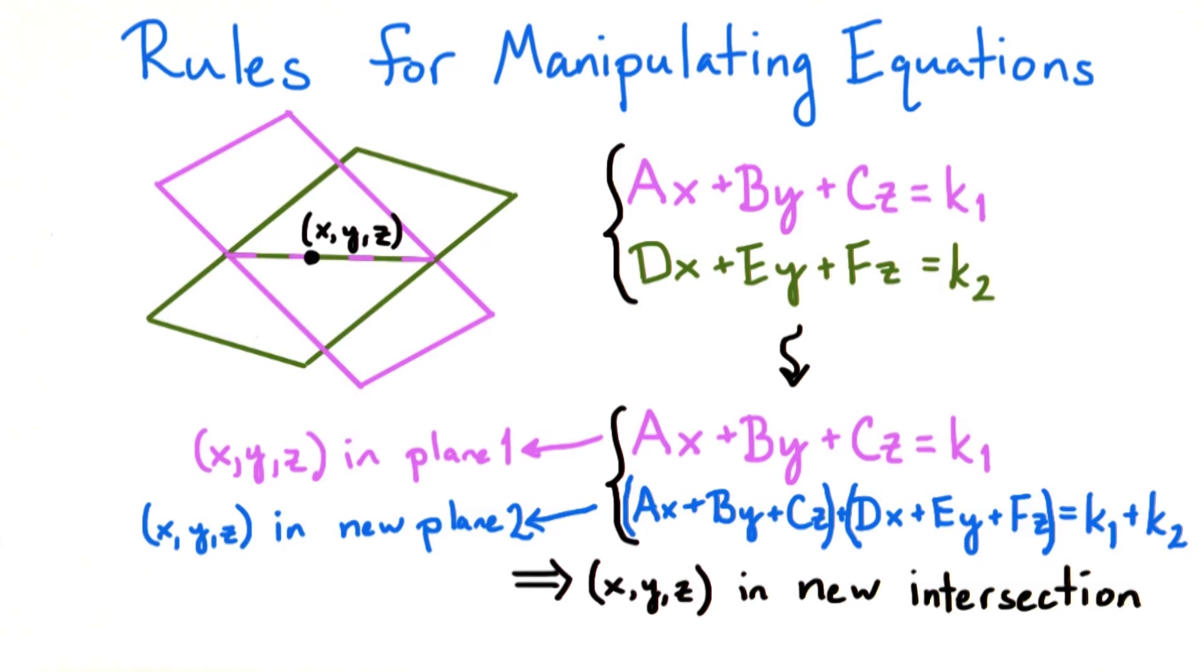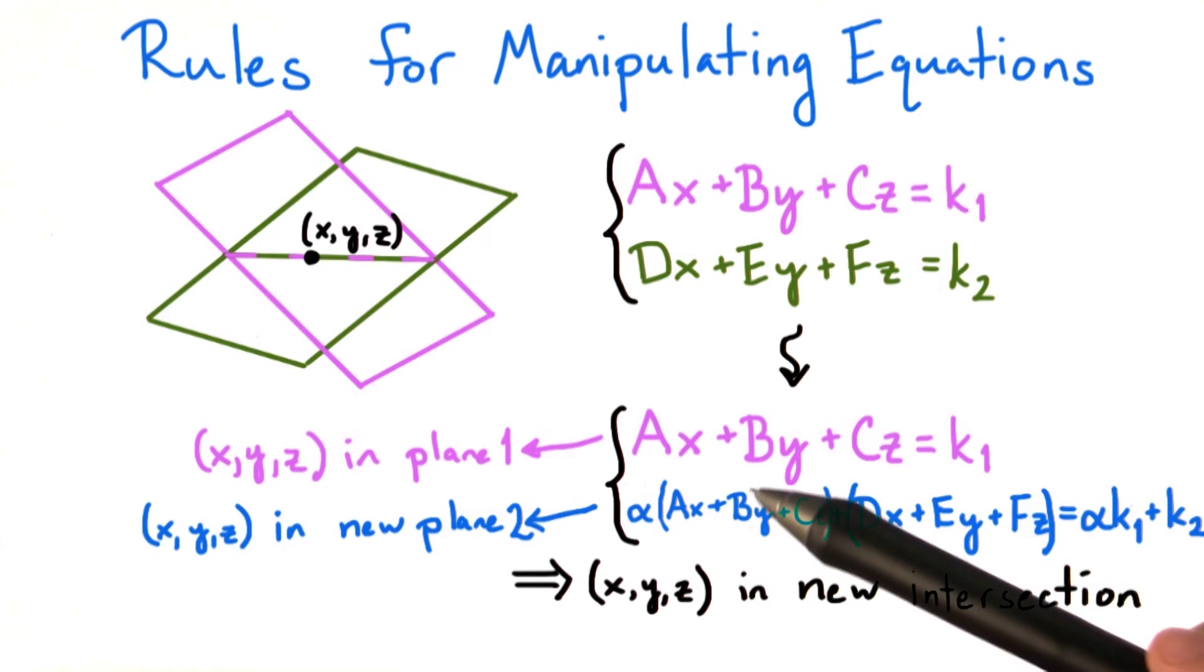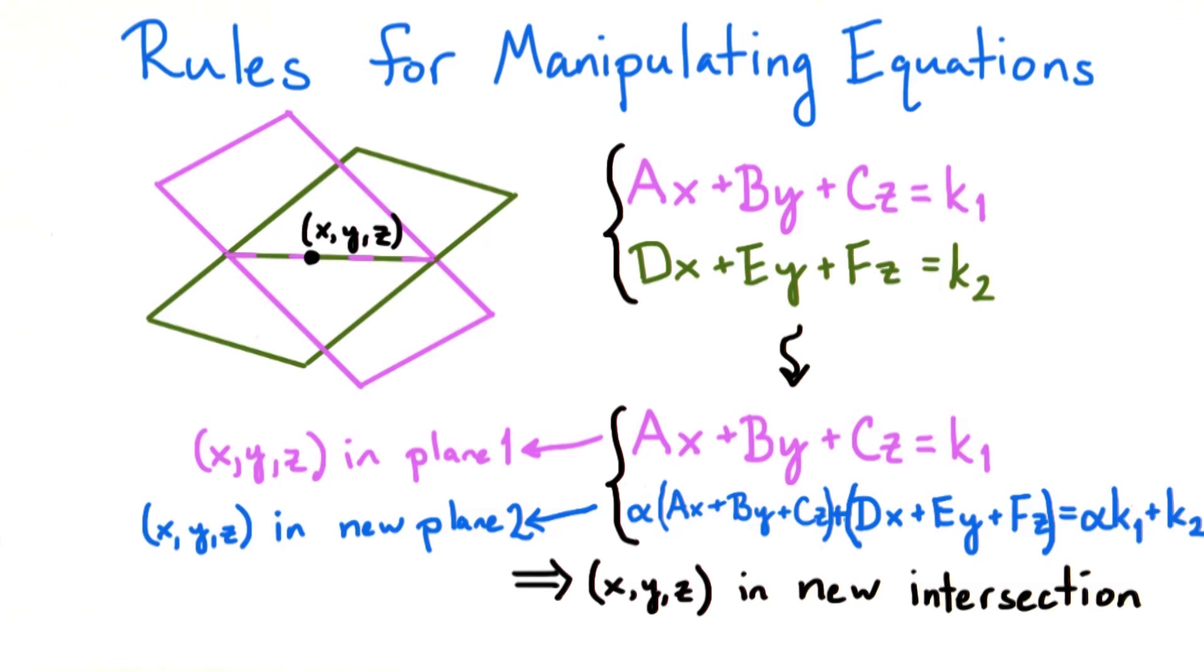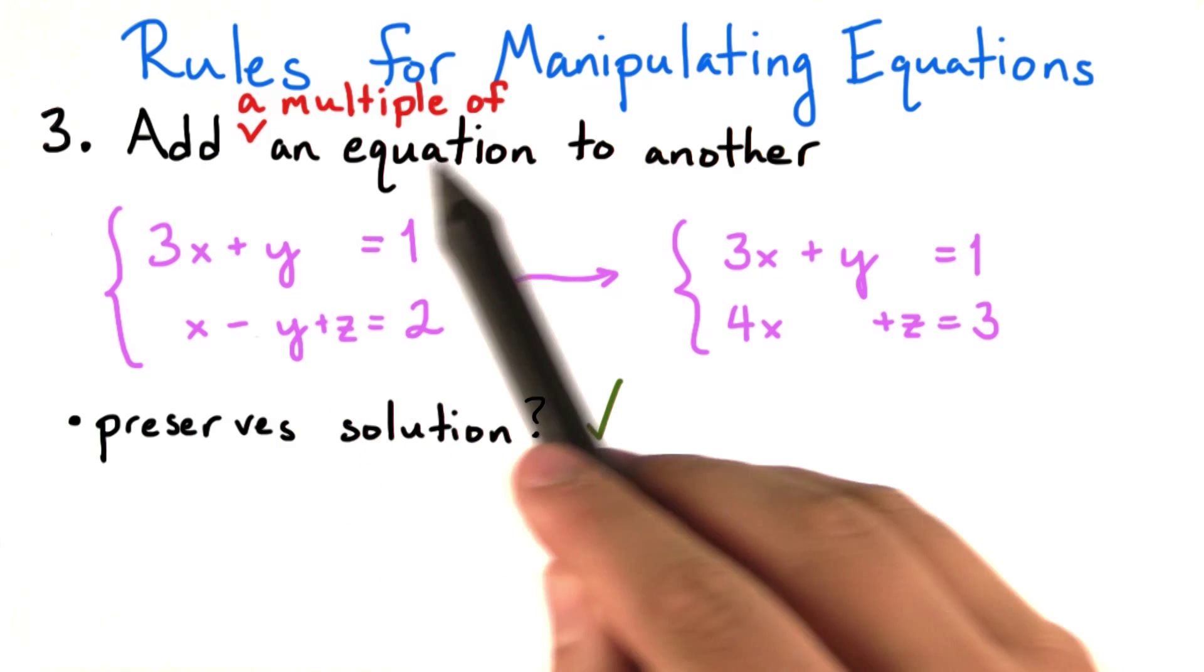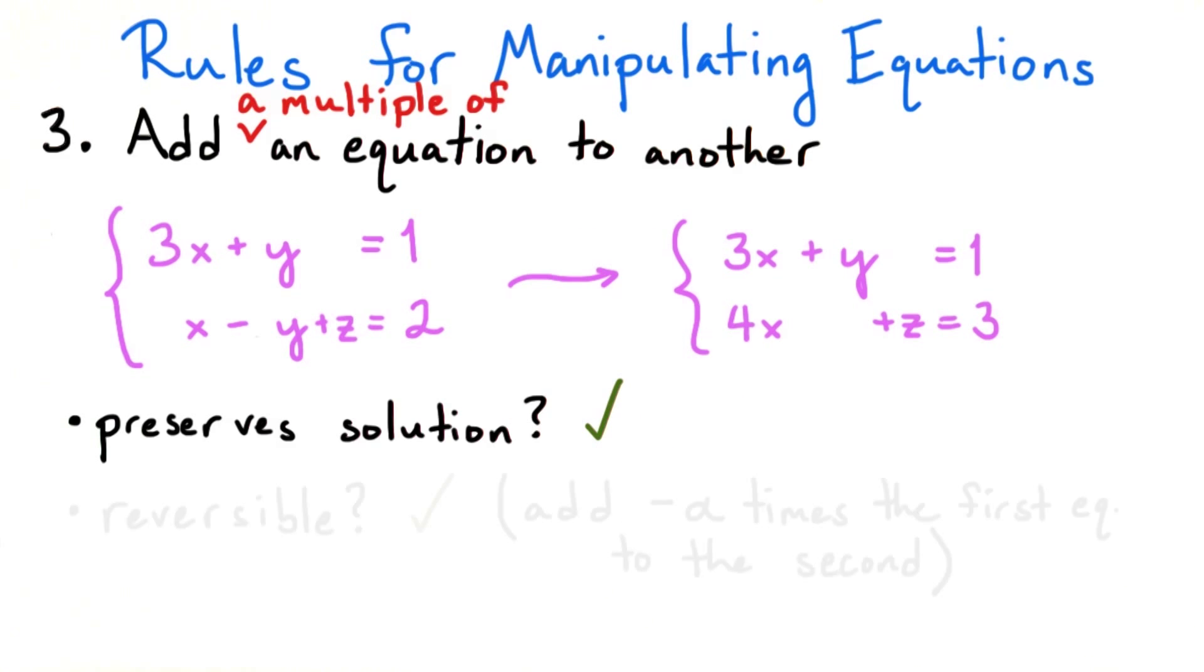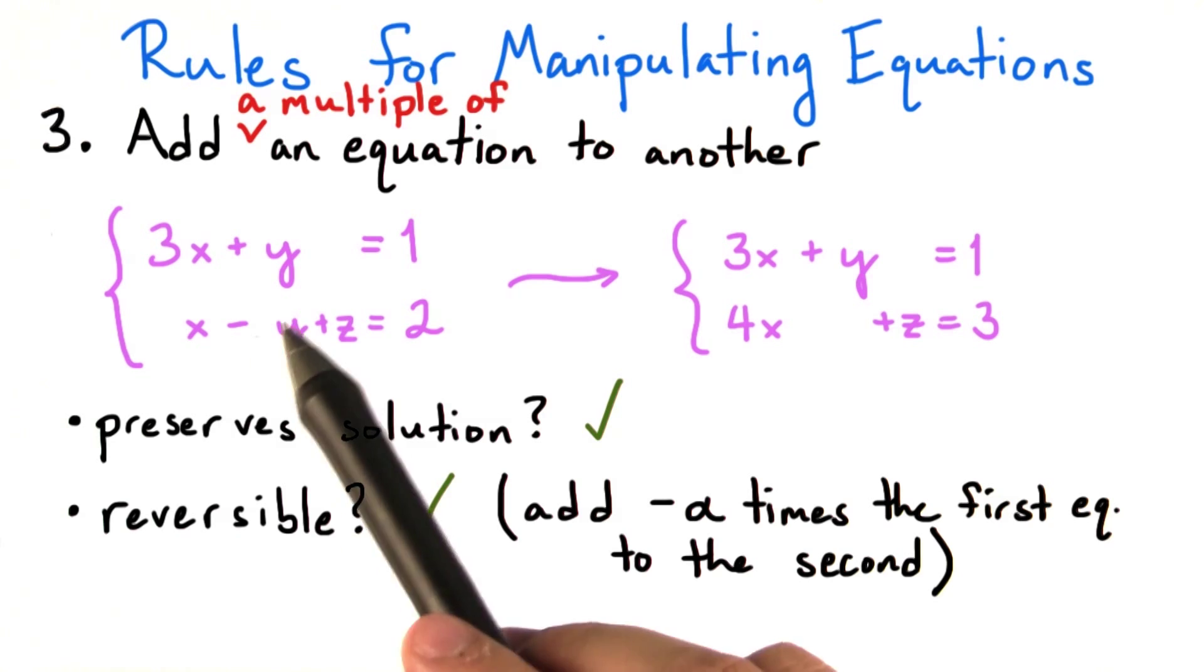Now, suppose I modified the operation so that instead of adding just 1 times the first equation to the second, I add an arbitrary amount, alpha times the first equation to the second equation. Notice that the same logic I applied earlier also holds in this case. So instead of just adding some equation to another equation, I can add a multiple of one equation to another. As I stated earlier, it's easy to reverse this operation as well. We just need to add negative alpha times the first equation to the second equation to get back to the original system.